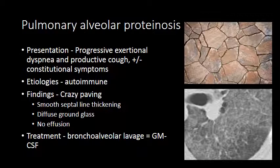Pulmonary alveolar proteinosis is a less common diffuse lung disease that can have a similar radiographic appearance to non-cardiogenic pulmonary edema. Patients typically present with progressive shortness of breath, productive cough, and sometimes constitutional symptoms such as fever or weakness. It is felt to be an autoimmune disease. On imaging, you see thickening of the interlobular septa and diffuse ground glass, classically described as a crazy paving pattern. There are no effusions or cardiomegaly, and the classic treatment is bronchoalveolar lavage.